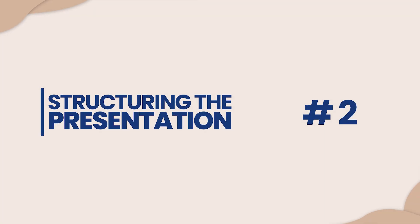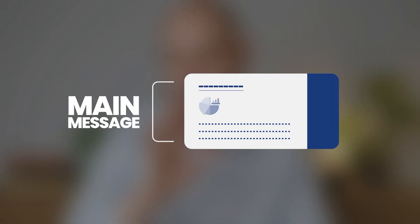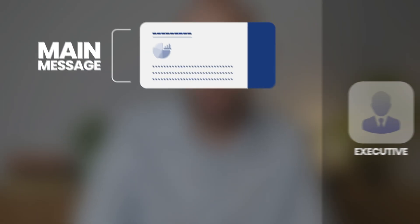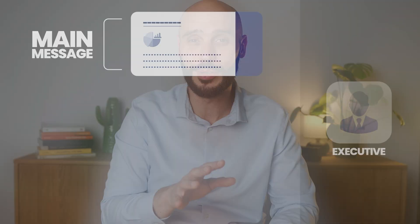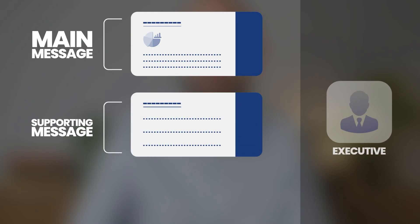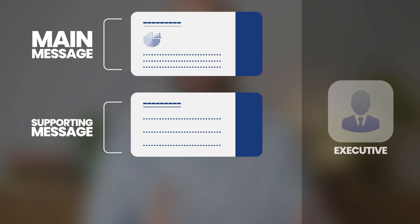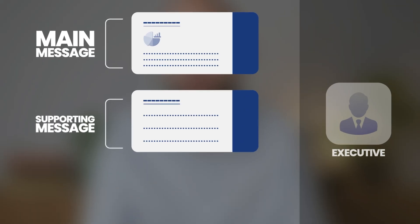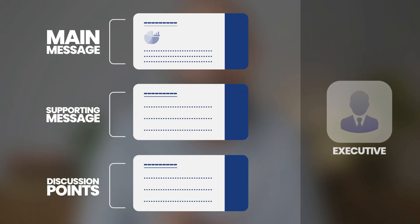Now let's learn how to structure the presentation. Open with your main message — don't save it for the end. Especially with executives, they want the bottom line first. Then provide the supporting evidence that backs it up. For each supporting message, give it its own dedicated slide. Each slide should contribute to your overall narrative. Stick to the one message per slide rule religiously — this creates a clear logical flow that's easy to follow. Finish with discussion points and concrete next steps. Don't just end with 'do you have any questions?' You want to facilitate the conversation.